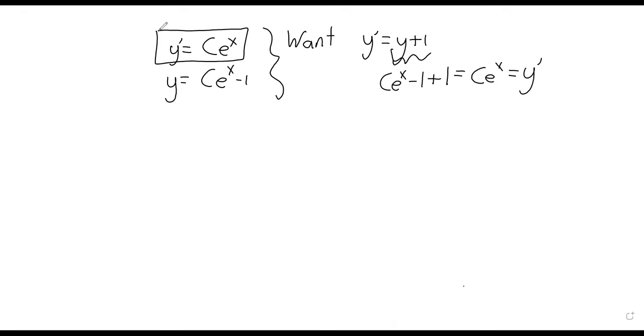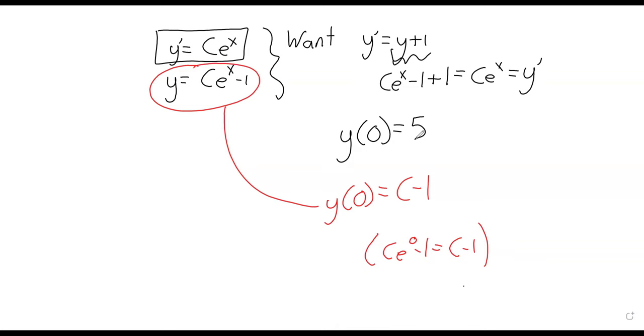And then there's some kind of condition we want to be satisfied. We want y of zero to be five. Now we know what y is. So we know that y of zero is C minus one, e to the zero is one. Ce^0 minus one is C minus one. And we want that to be five. So we want C to be six.